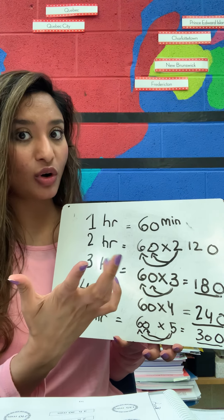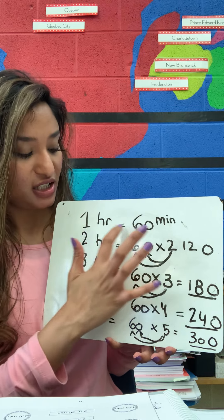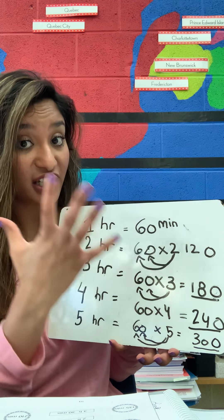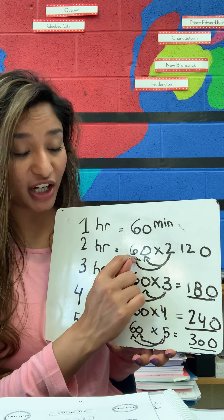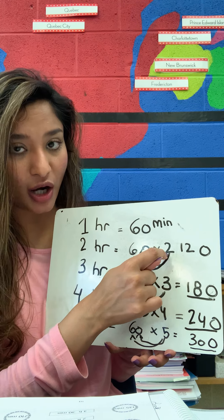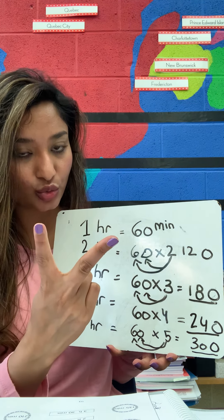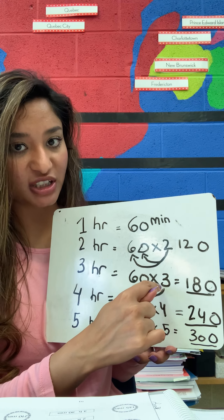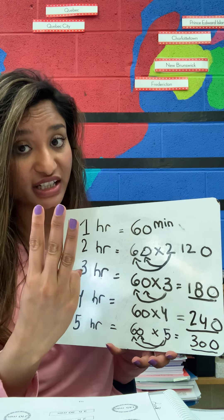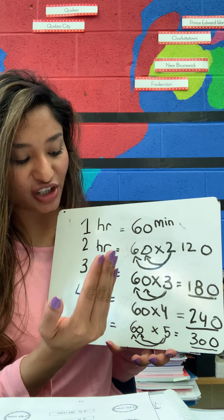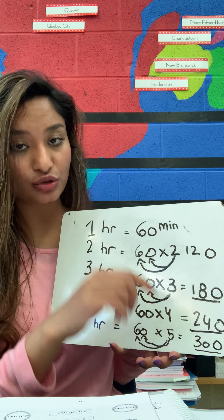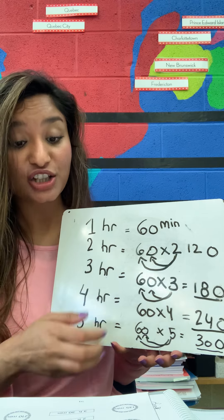So how do we convert hours into minutes? One hour has 60 minutes. How do we find the minutes? We multiply our 60 by our number of hours. If it's two hours, we multiply 60 by two. If they're saying how many minutes are in three hours, we multiply 60 by three. If they're saying how many minutes are there in four hours, we need to multiply 60 by four. That's how we find out.